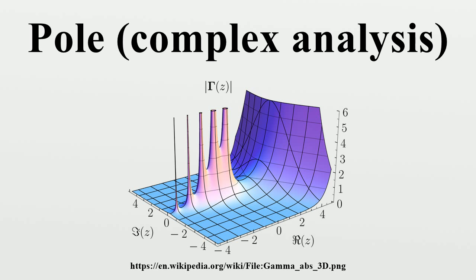The smallest such n is called the order of the pole. A pole of order 1 is called a simple pole. A few authors allow the order of a pole to be zero, in which case the pole of order zero is either a regular point or a removable singularity.